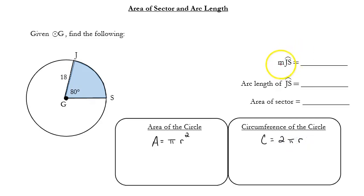The first part of the problem is asking you the measure of arc JS. When I see this lowercase m in front, it's saying the measure, now I'm talking degrees. Angle JGS is 80 degrees. It's a central angle because this is circle G, so I know the arc is also 80 degrees.